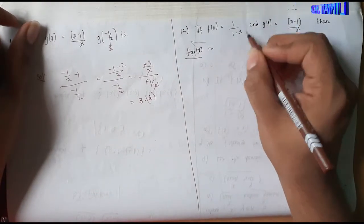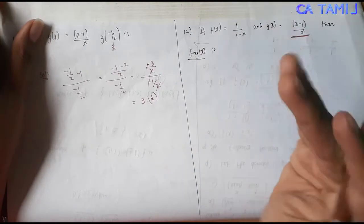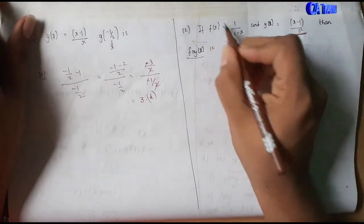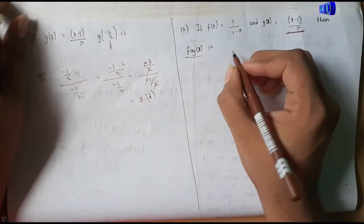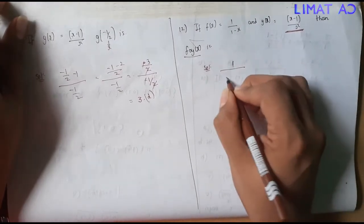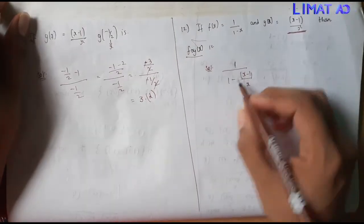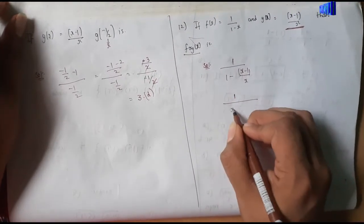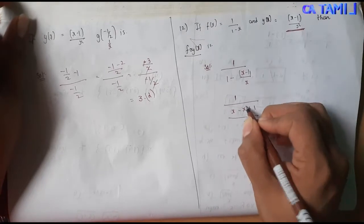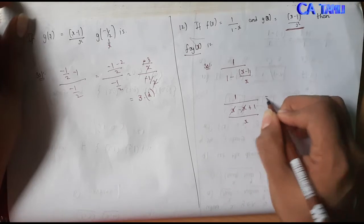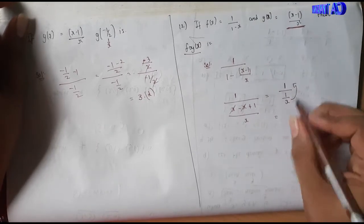If we see the form of f of x below x to 1, the form of x below x within x relative to x. Now let's do the cross multiplication: divided by x minus x, minus x, plus 1 divided by x. Now minus x plus x cancel. Remaining: 1 divided by 1 by x is there. So x is above.